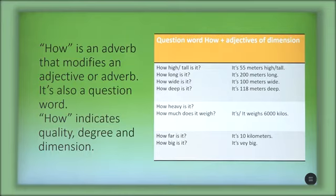You can see the questions: How high or tall is it? It's 55 meters high or tall. How long is it? It's 200 meters long. How wide is it? It's 100 meters wide. How deep is it? It's 118 meters deep. How heavy is it? And how much does it weigh? It's 6,000 kilos, or it weighs 6,000 kilos. And the last part, how far is it? It's 10 kilometers. And how big is it? It's very big. So these are adjectives of dimension.